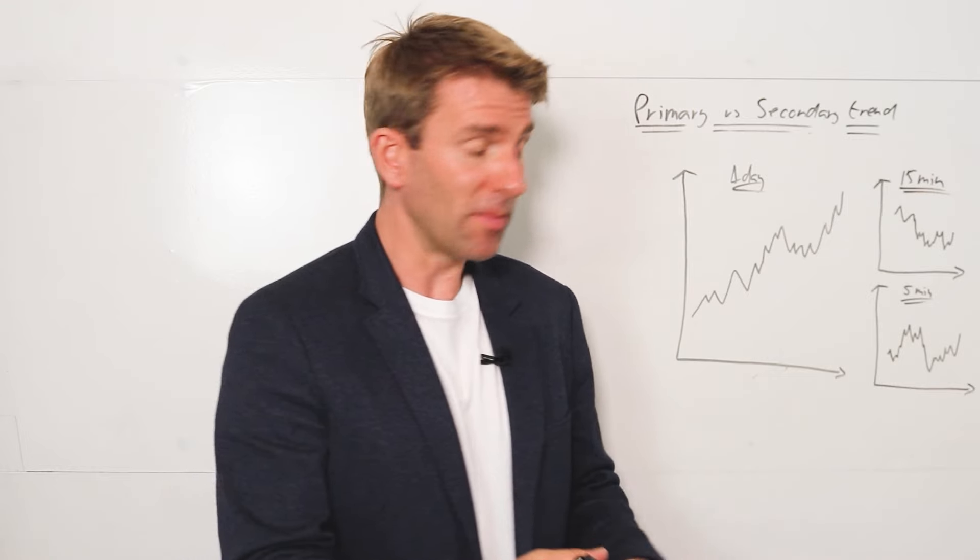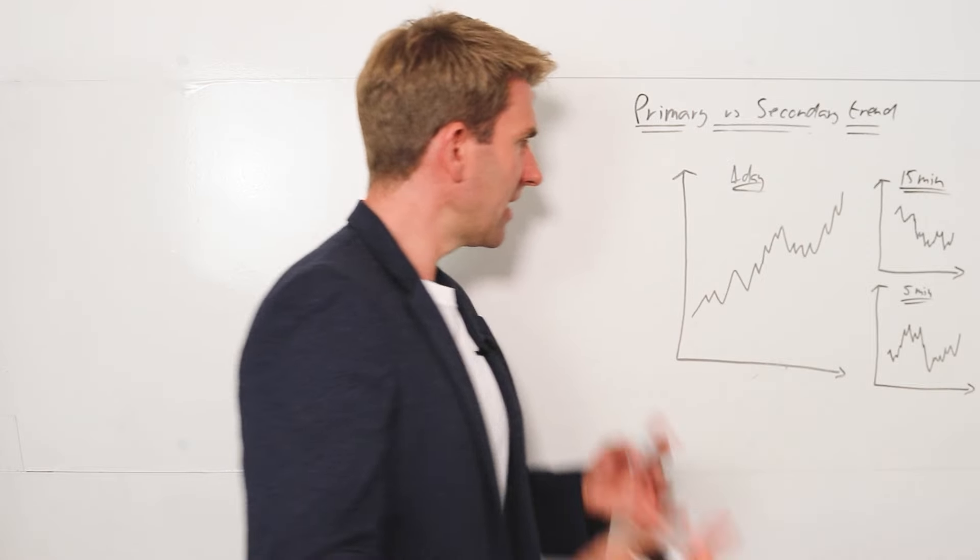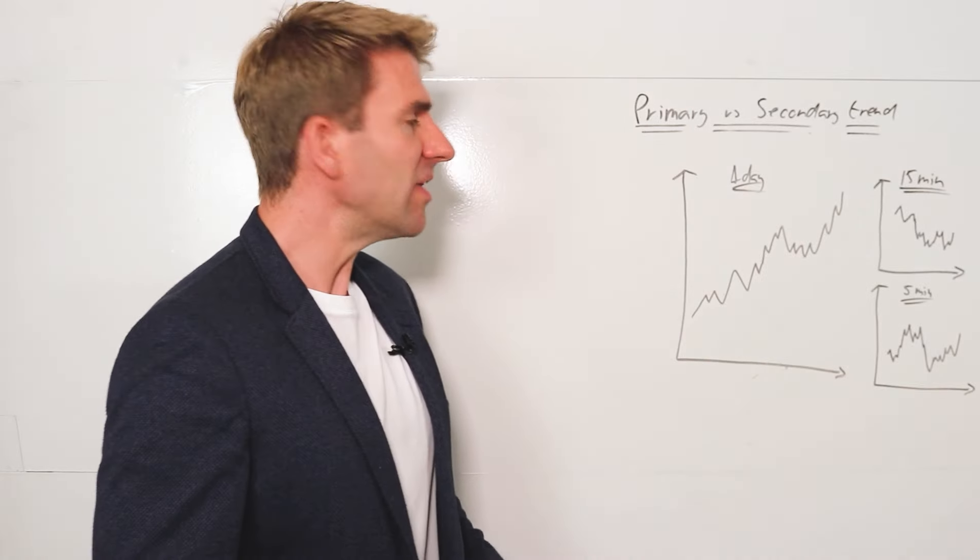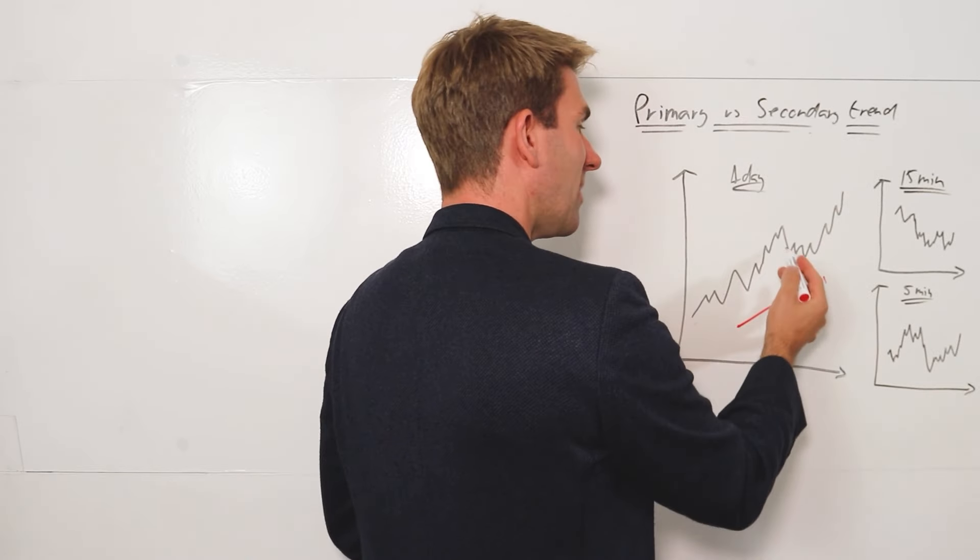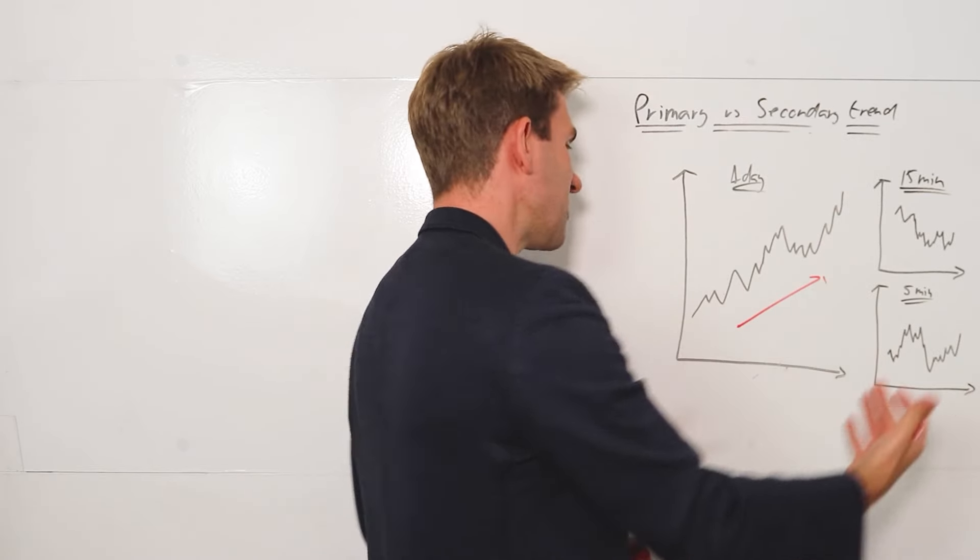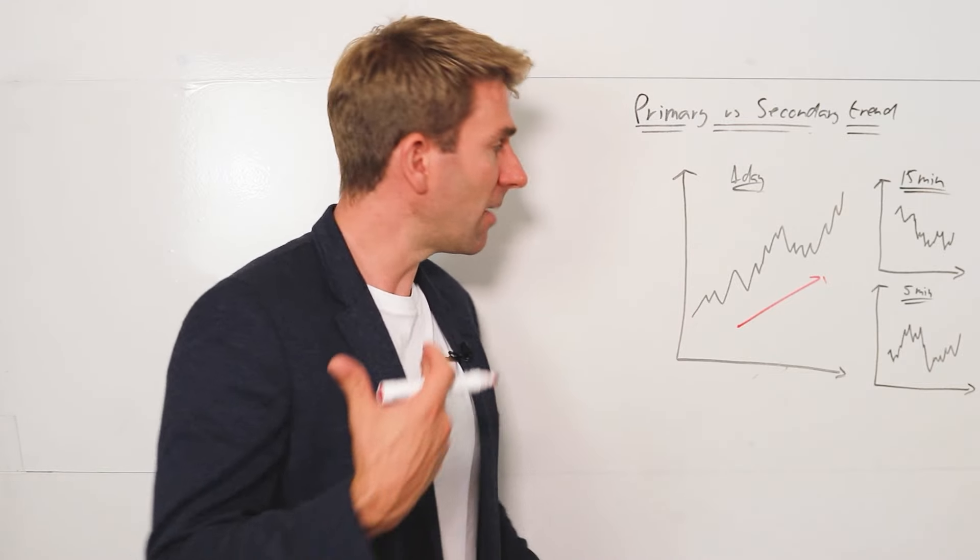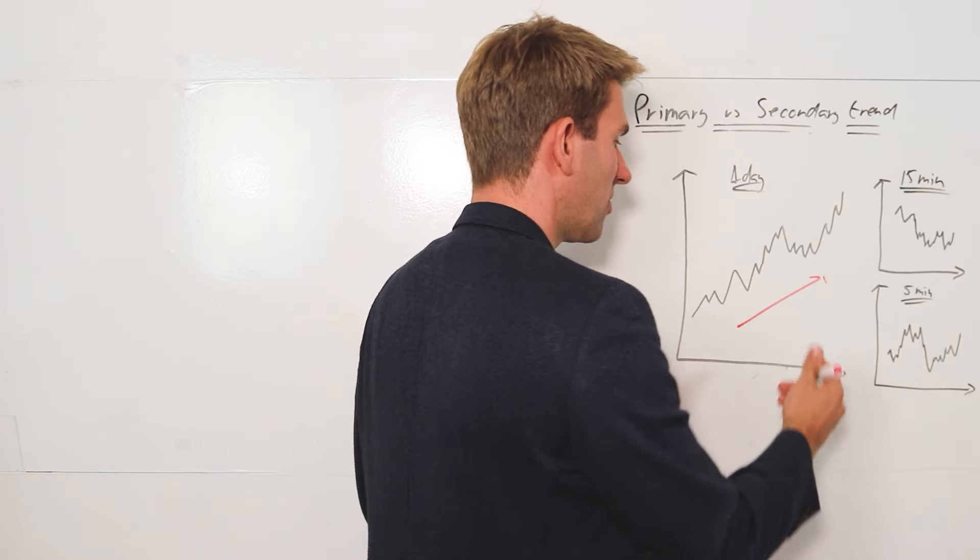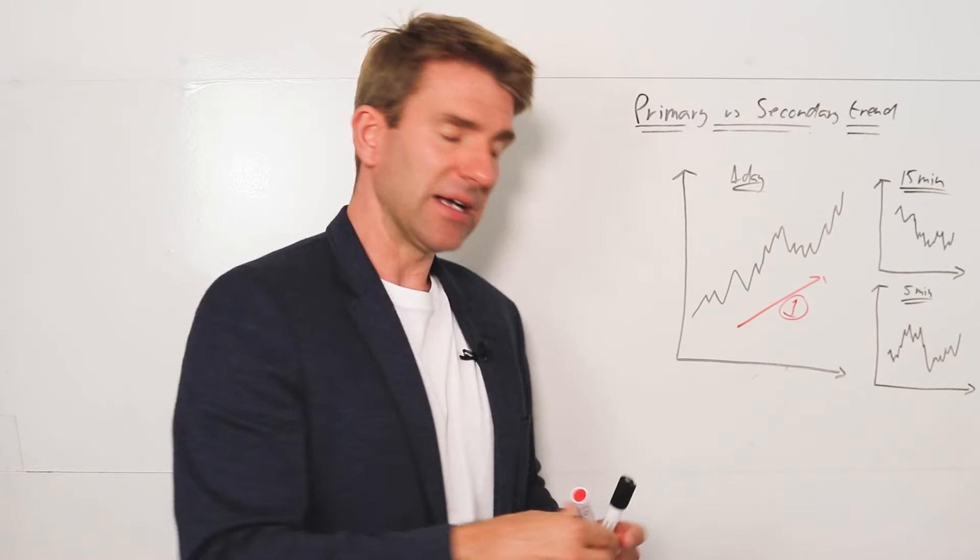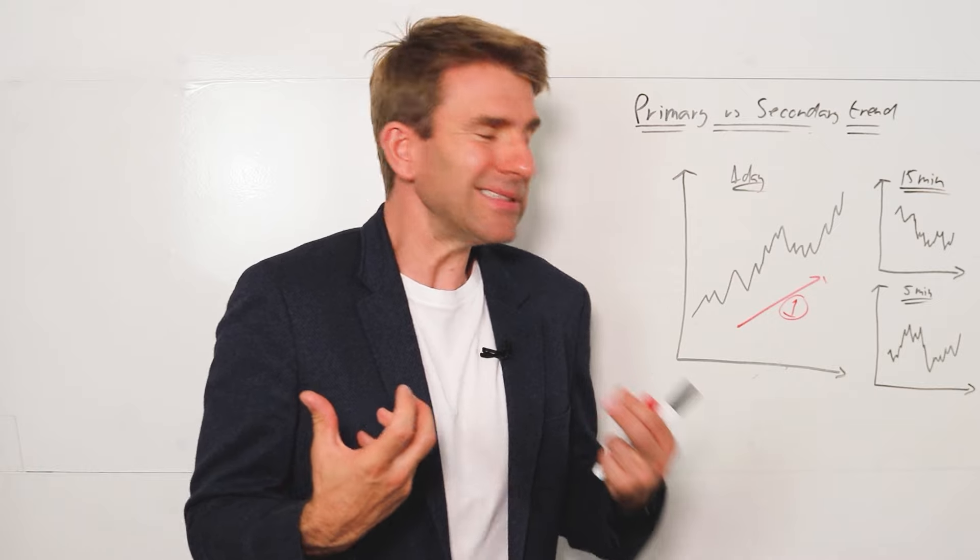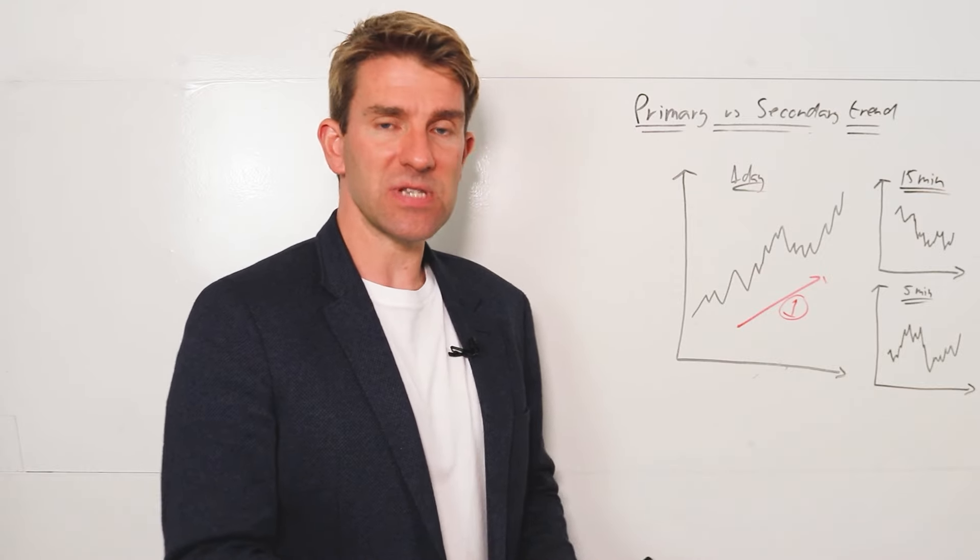Imagine we're on a daily chart here right now. Look at the daily chart. No one could really argue this is not an uptrend. We've gone from bottom left to top right. Yes, we've had pullbacks, consolidations, different things on the way, but generally speaking that is an uptrend. So that would be our primary trend. The first trend here is our primary trend—it's an uptrend on the higher time frame. That's what's happening now.